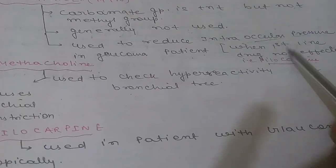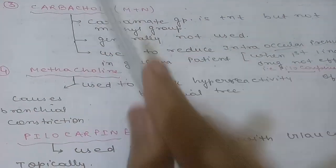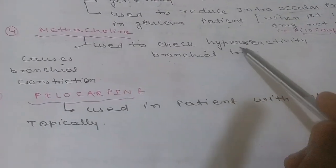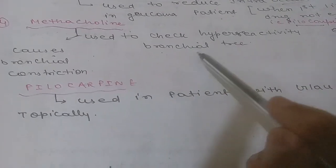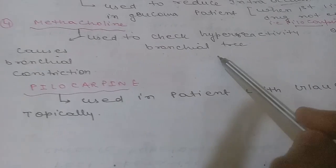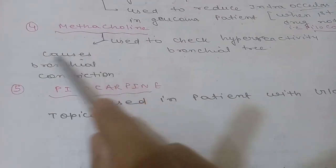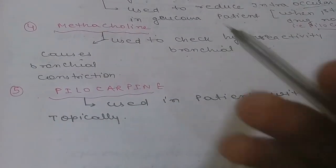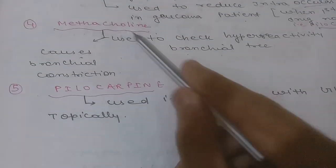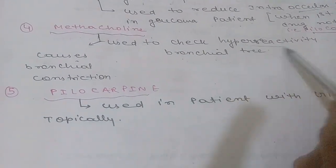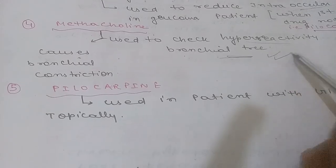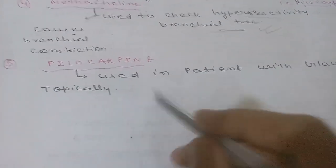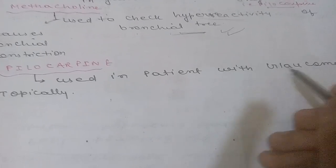Methacholine is used to check hyperactivity of the bronchial tree. It causes bronchoconstriction due to stimulation of muscarinic receptors and is used to check hyperactivity of the bronchial tree. Pilocarpine is used mainly in patients with glaucoma.